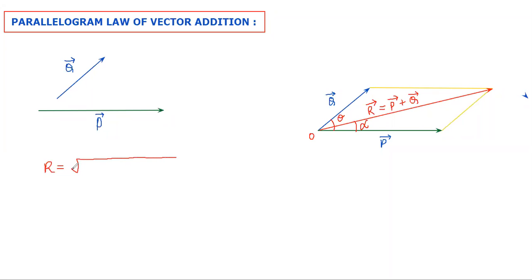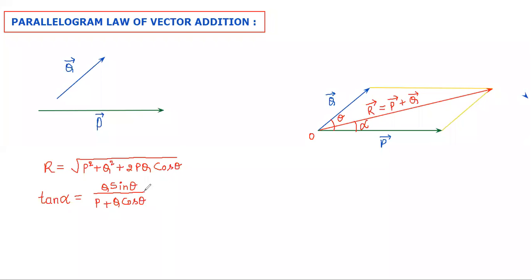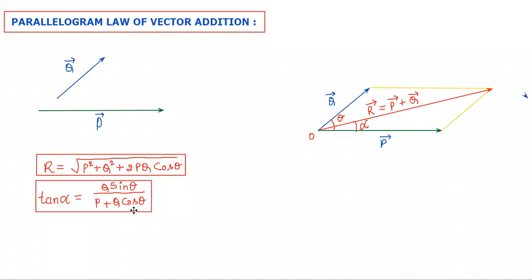R is equal to the square root of P squared plus Q squared plus 2PQ cos theta. This formula for magnitude is equation number one, and the direction formula using tan alpha equals Q sin theta divided by P plus Q cos theta is equation number two, representing direction.